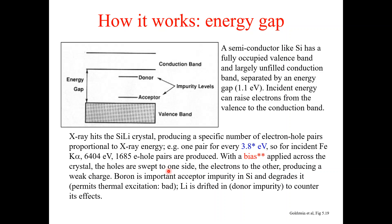With a bias applied across the crystals, the holes are swept to one side and the electrons to the other, producing a weak charge. Boron is an important acceptor impurity in the silicon that degrades it by permitting thermal excitations, and lithium is drifted as a donor impurity to counter this effect.